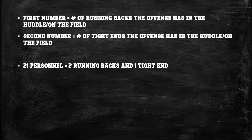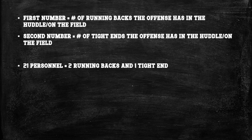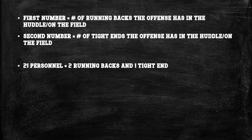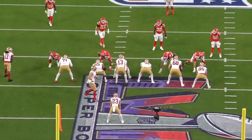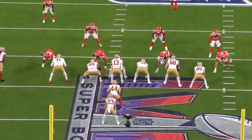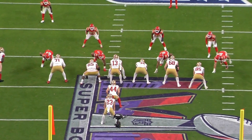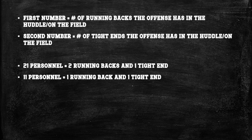So when someone says the offense was in 21 personnel, that means there were two running backs and one tight end in the huddle or on the field. The I-formation is a great example of this — you have the tailback and fullback, those are the two running backs, and then the tight end. If someone were to say 11 personnel, that means one running back and one tight end.